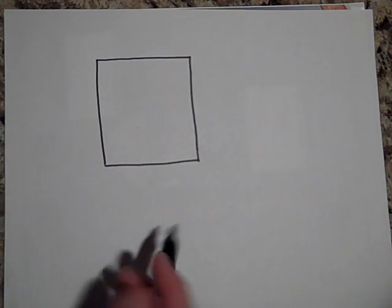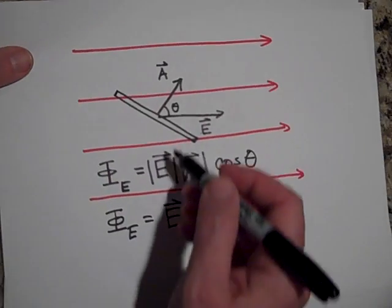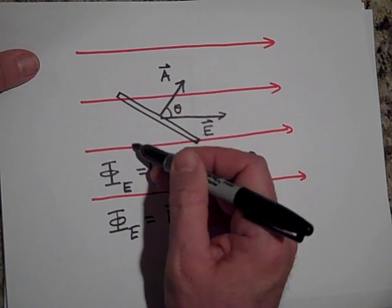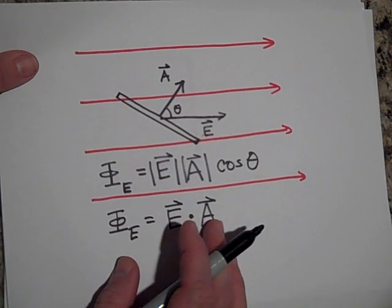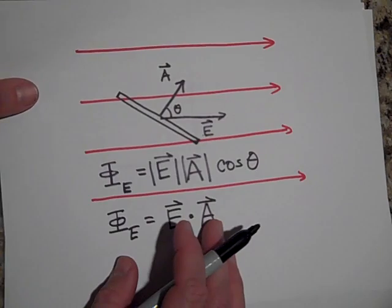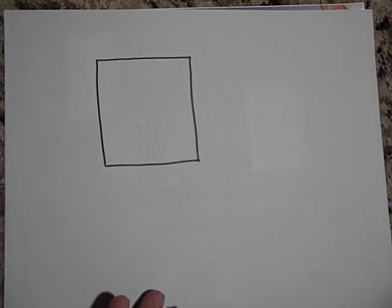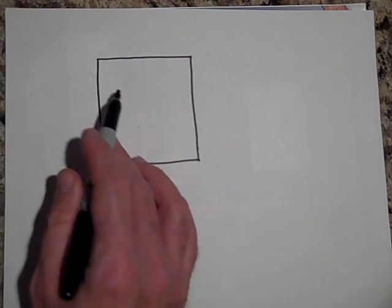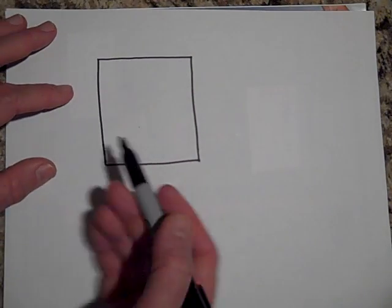By the way, you might wonder why A wasn't going—if it's defined as normally out of the surface, why is it not going this way? And you know what? It can be either one of those ways right now. So here we go, there's field coming out, but it's not uniform. As you go to the right, it gets stronger and stronger.